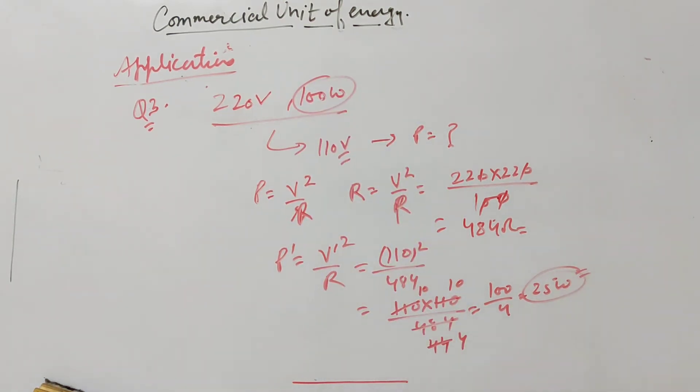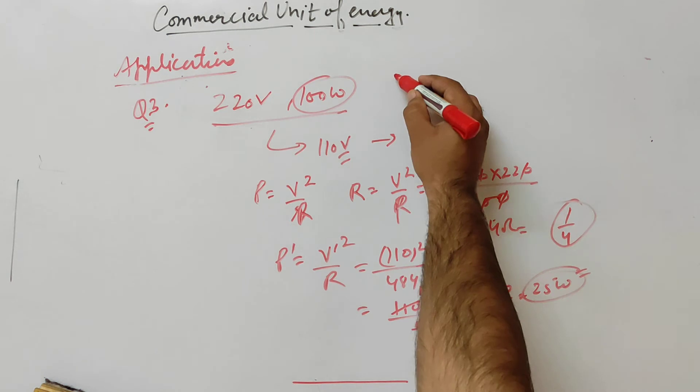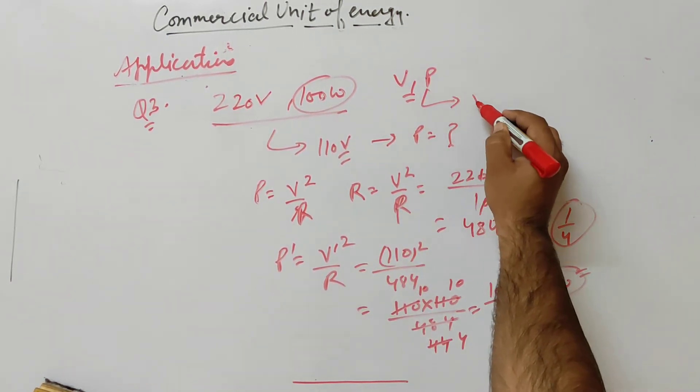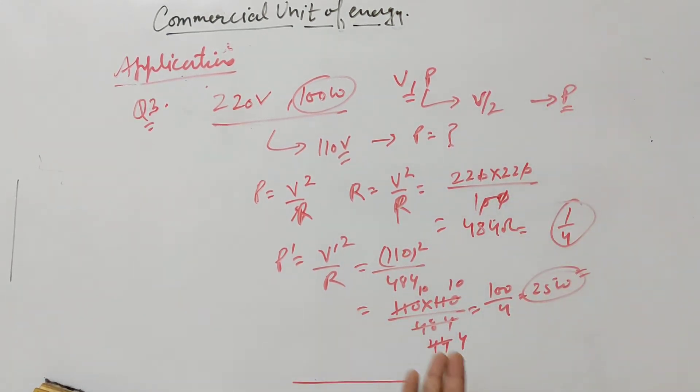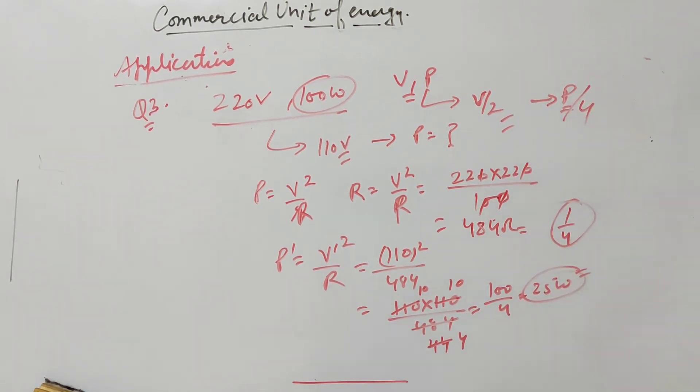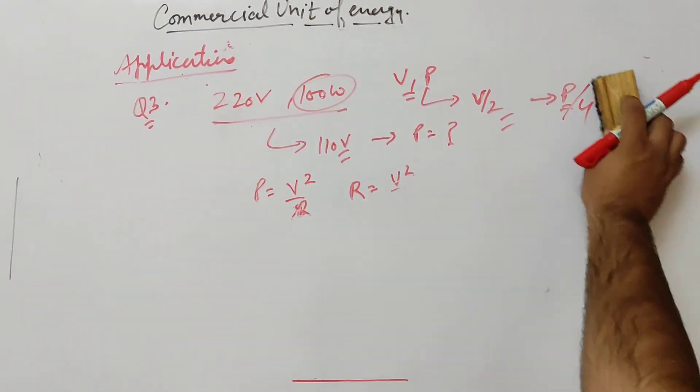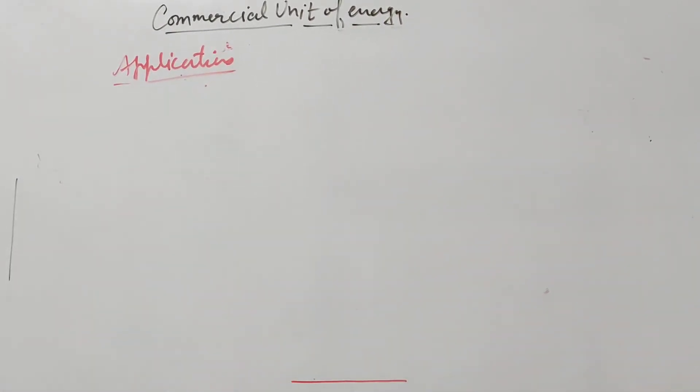So power becomes 1 by 4. In general, if voltage is halved, power becomes 1/4. This is an important question from NCERT exercise chapter end, question number 3.